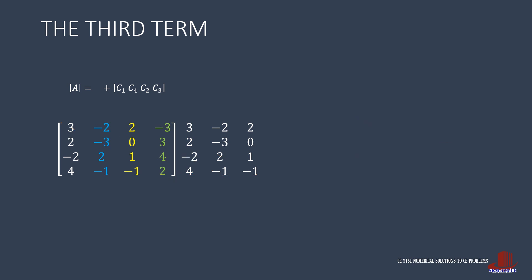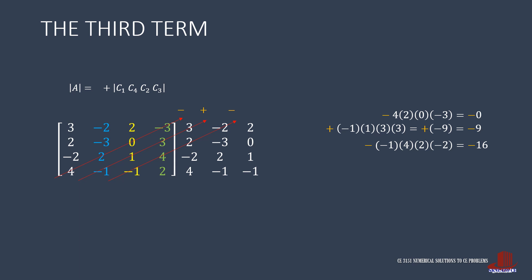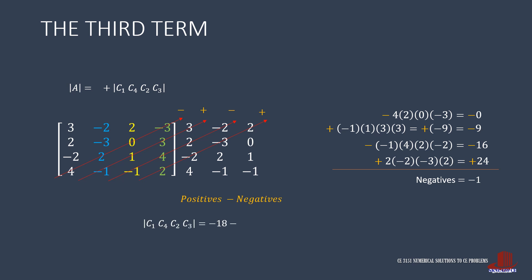The negatives for the third term start with the product of 4, 2, 0, and negative 3, preceded by a negative, but this ends up as 0. Next is the anti-diagonal with negative 1, 1, 3, and another 3, preceded by a positive, resulting in negative 9. The third has negative 1 multiplied by 4, then 2, and negative 2, with a negative before it, giving negative 16. The last has 2, negative 2, negative 3, then positive 2, preceded by a positive, giving positive 24. The negatives simplify to negative 1. So placing positives minus negatives, the third term comes out as negative 17.